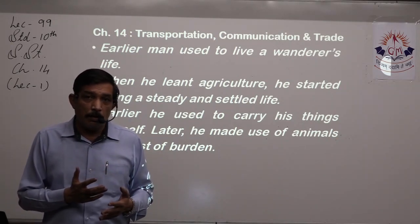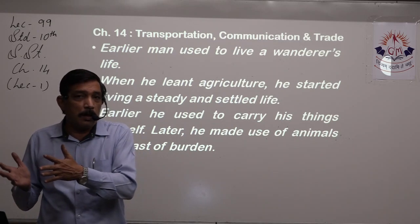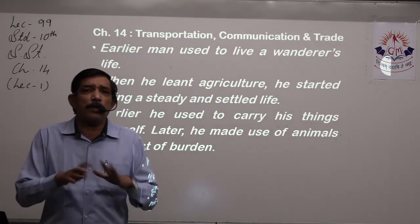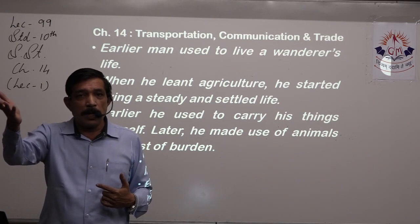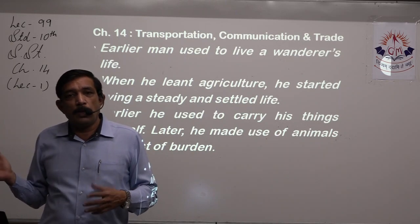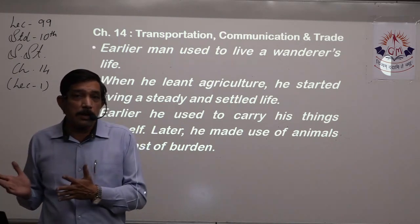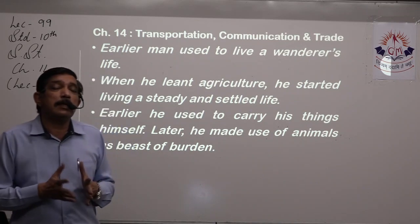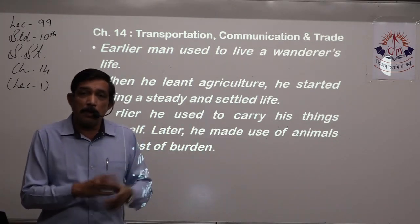So the barter system started — exchanging things without any money. For example, 'I will give you wheat, you give me clothes.' He gave wheat to the cobbler and got shoes. This barter system needed a little bit of transport, and by that point wheels had already come into place. He also engaged animals — earlier animals were used to take the load, and then a small carriage was attached to the animals.